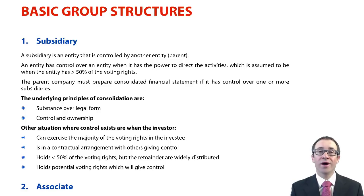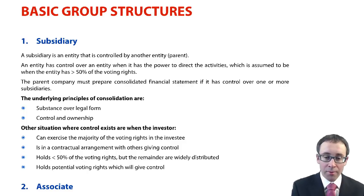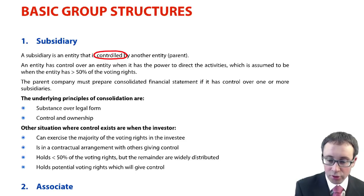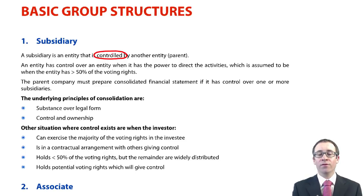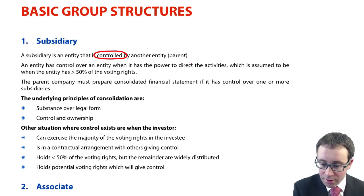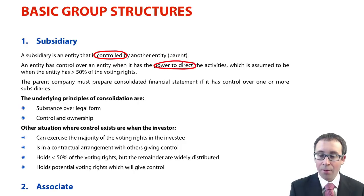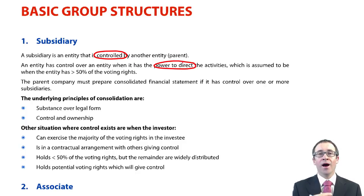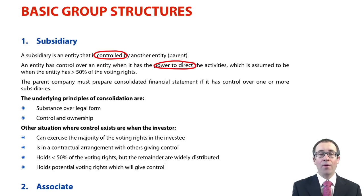We need to look at what defines a subsidiary and what defines an associate. A subsidiary is whereby we have control — the power to direct the activities. If we can pass an ordinary resolution within that subsidiary, then we can appoint the directors of that subsidiary, and we can tell those directors what to do. If that's the case, then we have the power to direct and therefore the power to exert control.